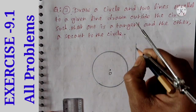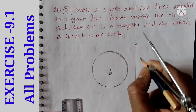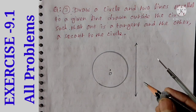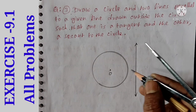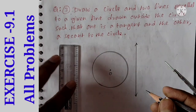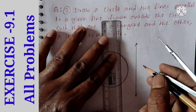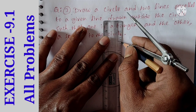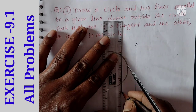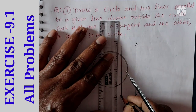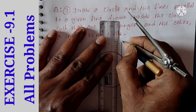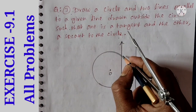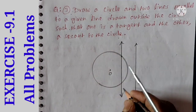Draw a line that is not intersecting or touching the circle — parallel to our circle. Then this line intersects two points and touches the circle here. This line touches two points and intersects.